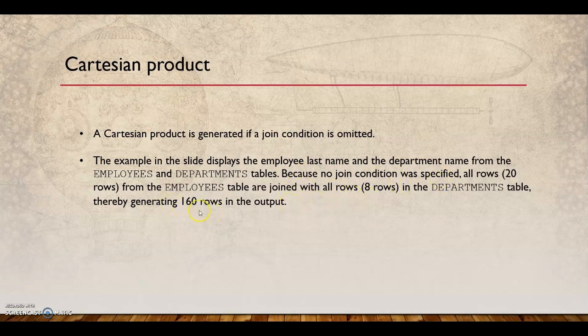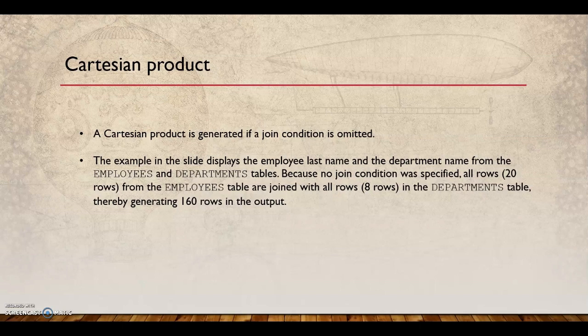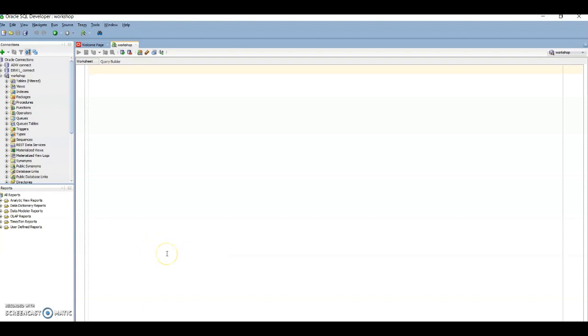A Cartesian product generally doesn't produce meaningful information, which means the join condition was omitted. You need to be careful when writing join conditions and cross-verify your results — most of the time if something looks wrong, you may have produced a Cartesian product. The best way to learn joins is to practice: use the provided tables, manipulate the join conditions, and verify whether you get the expected results.